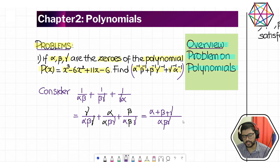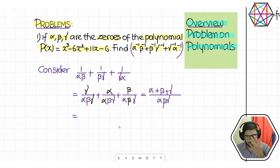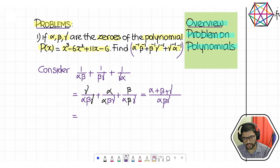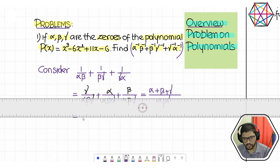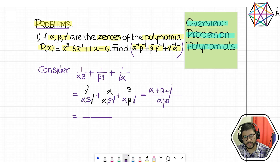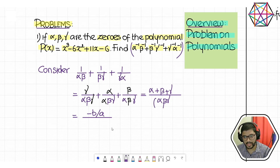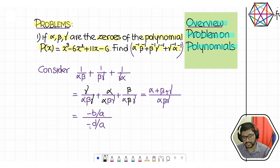If you rearrange the numerator terms, you get α + β + γ, which is the sum of all the zeros. The denominator is αβγ, the product of all the zeros. Sum of all zeros is −b/a, and product of all zeros is −d/a. So the expression becomes (−b/a) divided by (−d/a). The minus signs cancel and a cancels, leaving b/d.